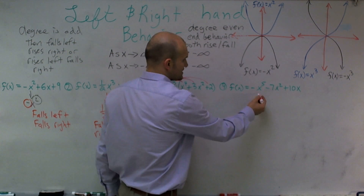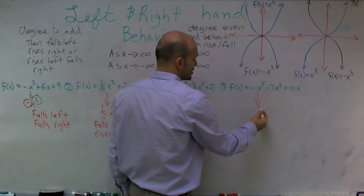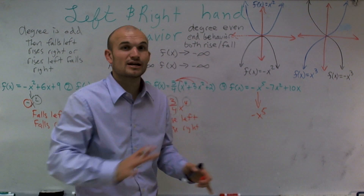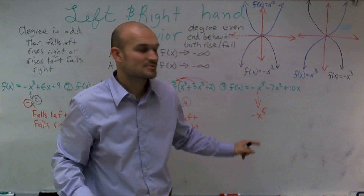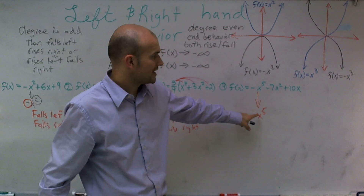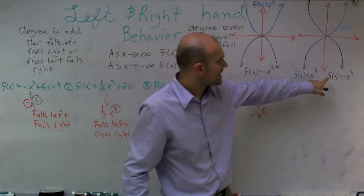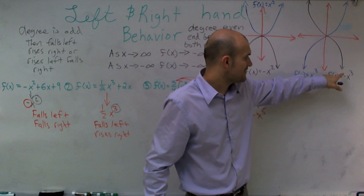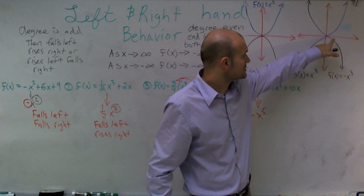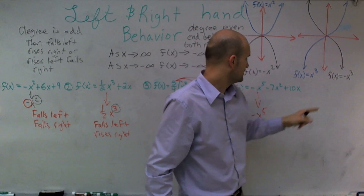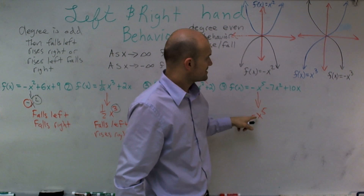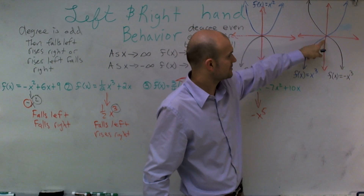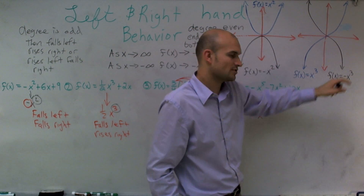Lastly, the leading term is negative x to the fifth. I don't care about any other terms. Looking at it, the degree is odd, so it's going to follow the black graph, which is f of x equals negative x cubed. Since it's negative, it's going to rise to the left and fall to the right.